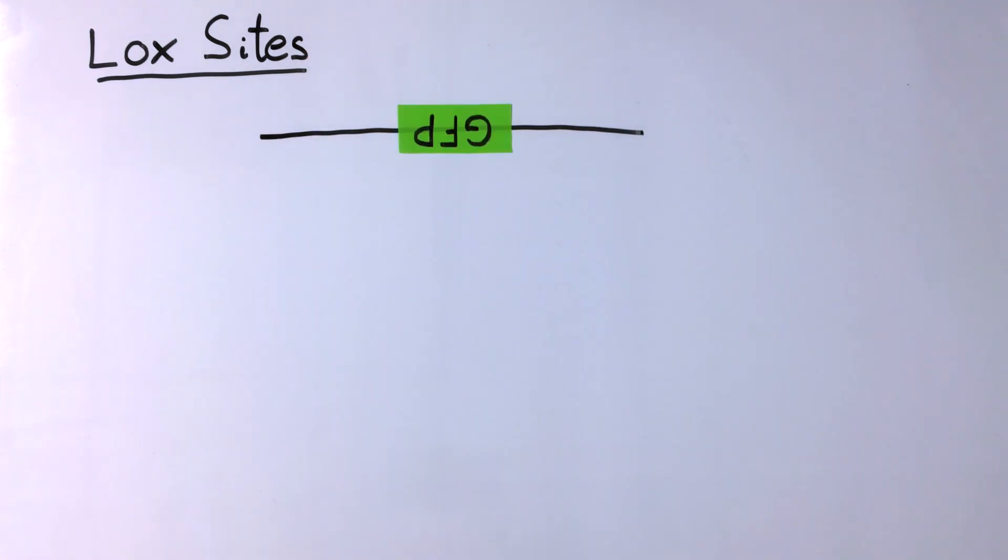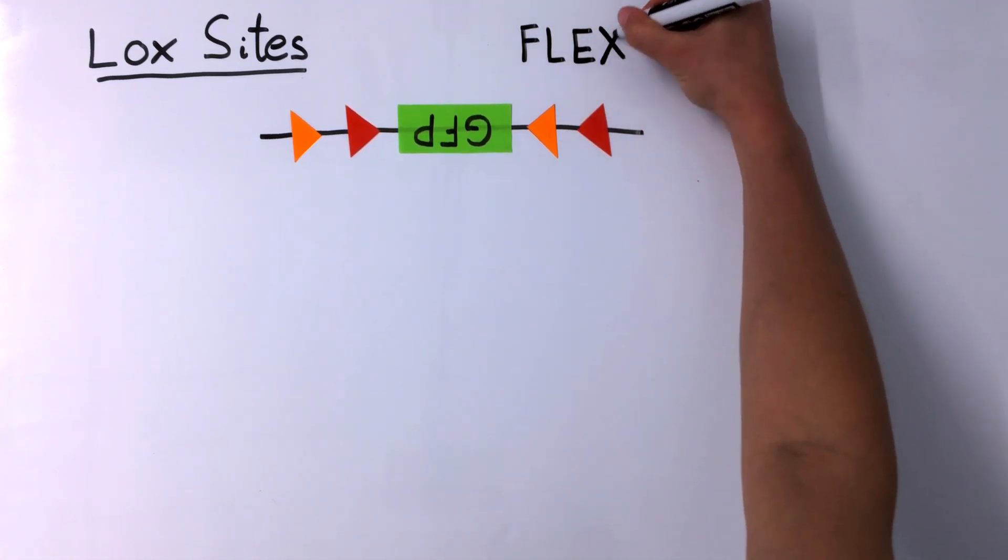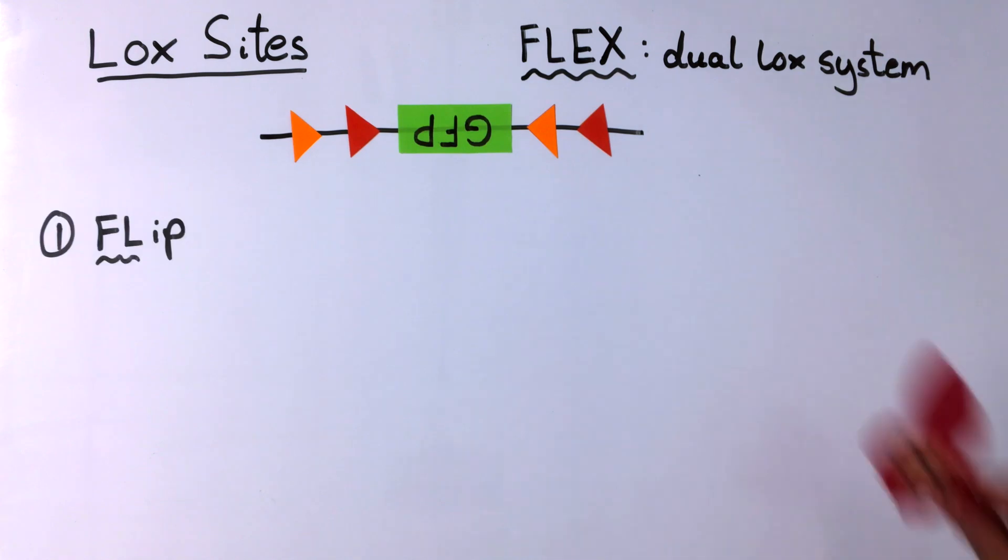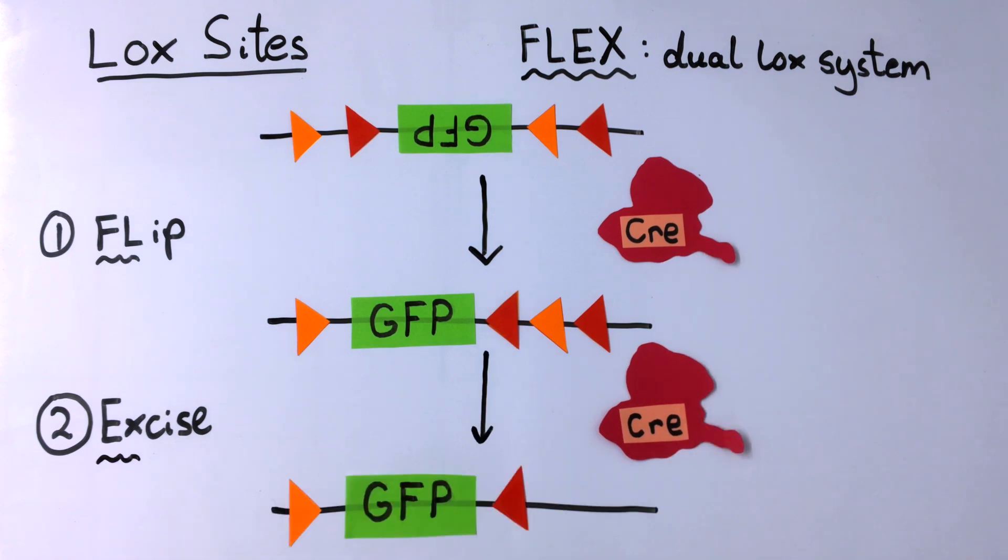Transfer plasmids will usually have two pairs of loxP sites. This dual-lox system is called FLEX or DIO. Cre will first flip the sequence between the first pair and then excise the sequence between the second pair.